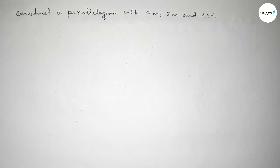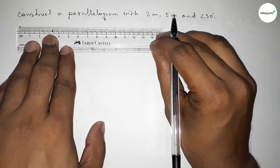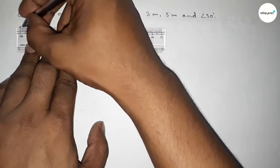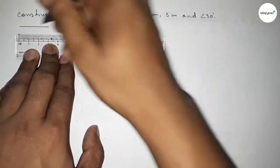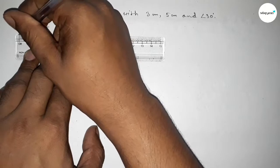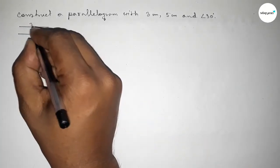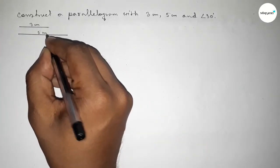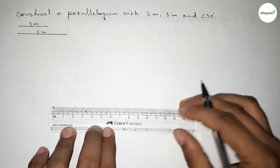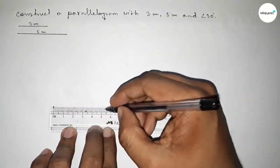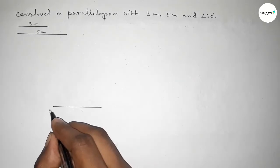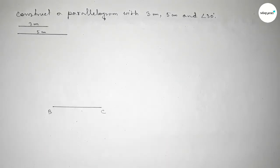First of all, we have to draw the two sides. The first side is 3 centimeters, and then drawing another line of length 5 centimeters. So this is 3 centimeters and this is 5 centimeters. Again, we have to draw a line of length 5 centimeters, taking point B and point C.